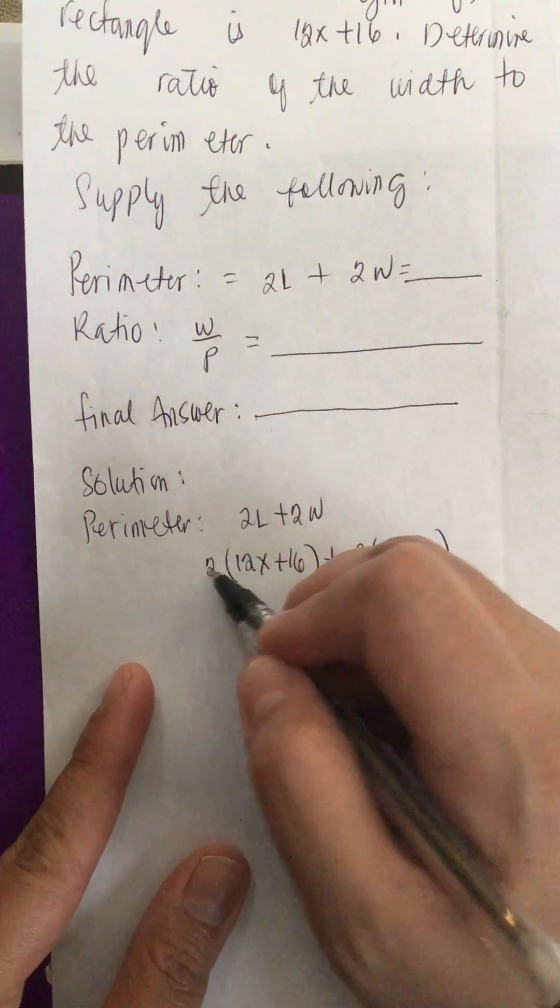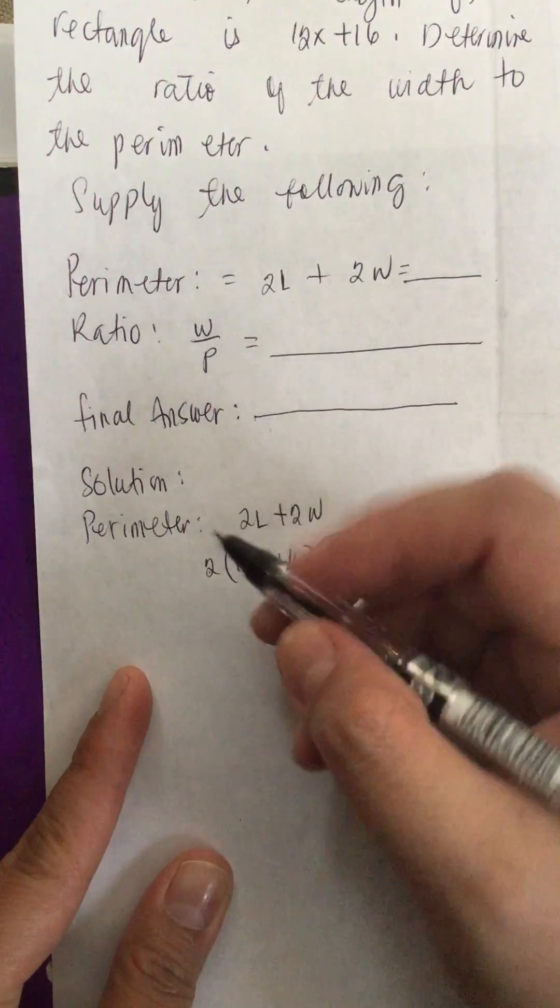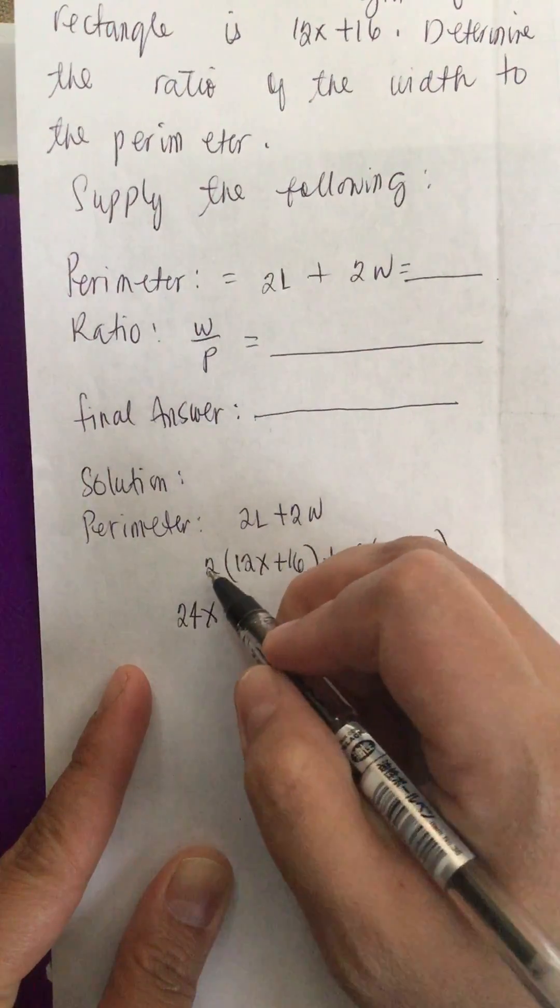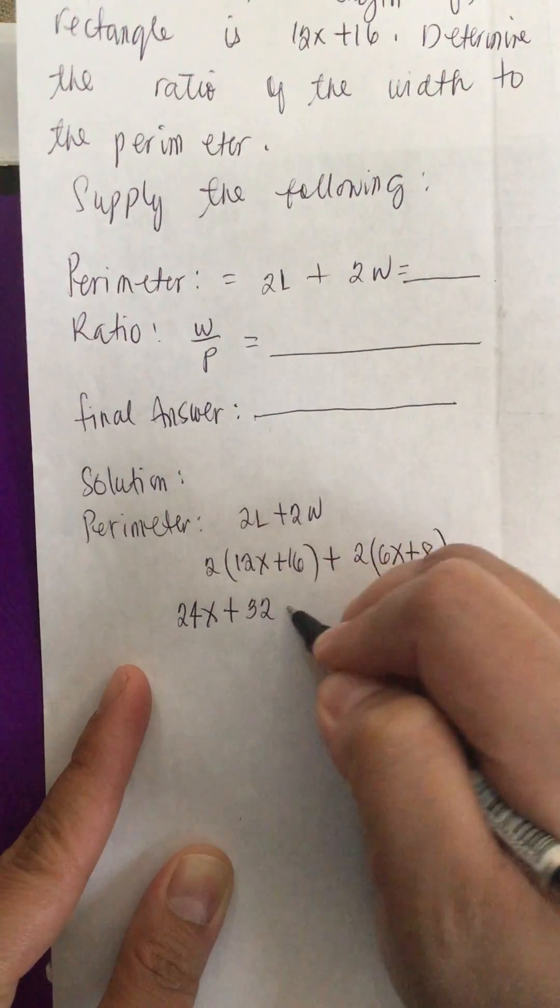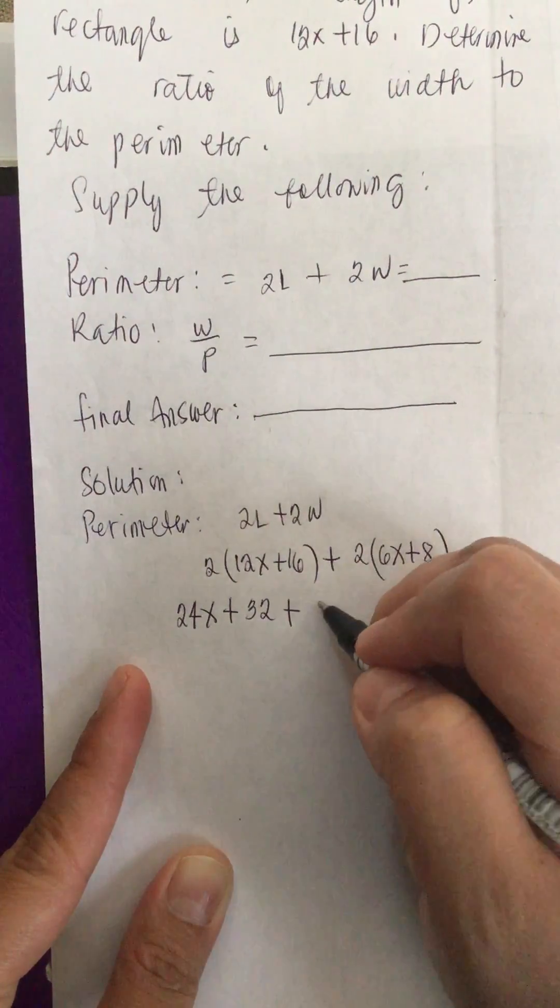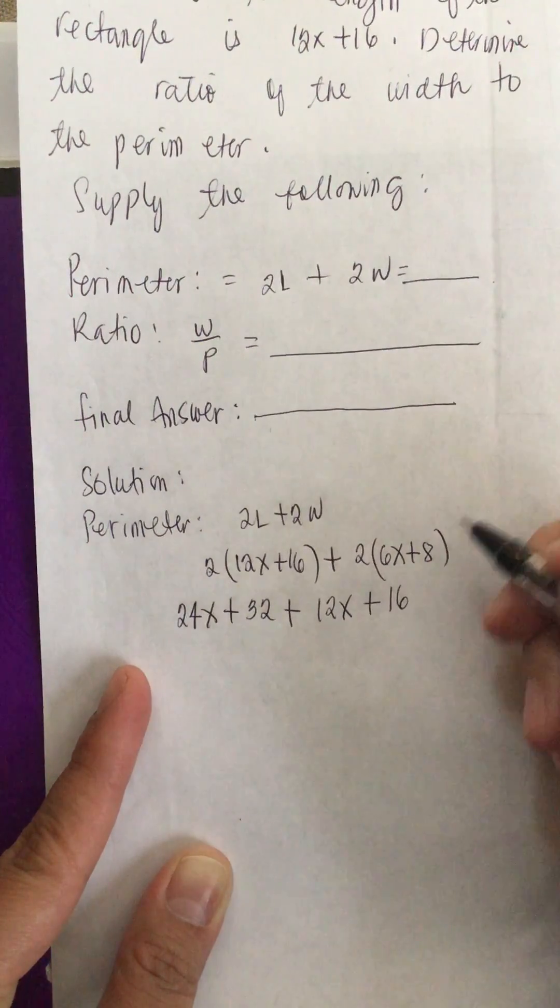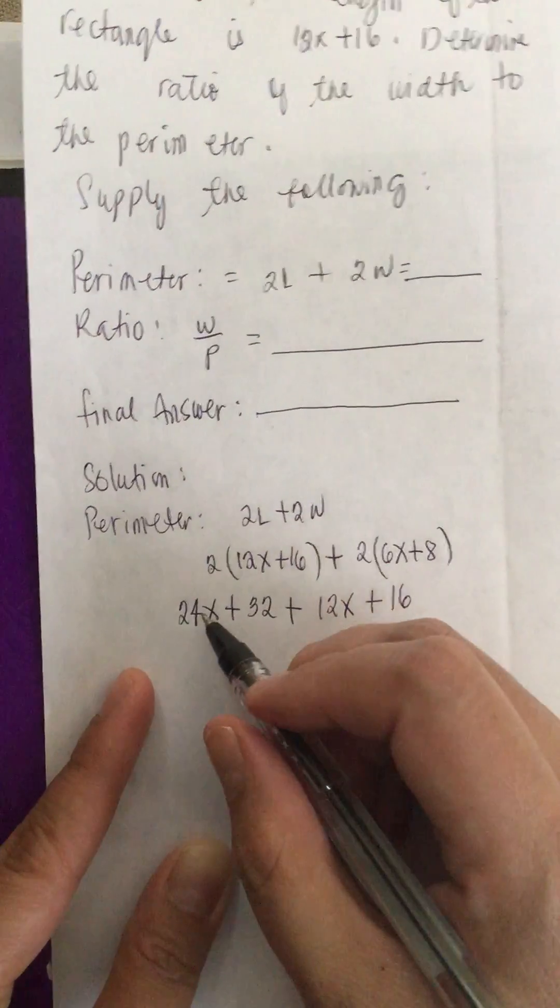Now we solve this. 2 times 12x is 24x, plus 2 times 16 is 32, plus 2 times 6x is 12x, plus 2 times 8 is 16.